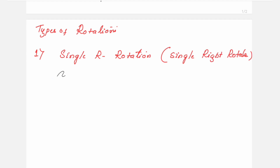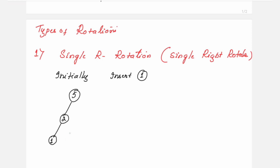The single right rotation rotates the edge connecting the root and its left child in the binary tree. Initially, assume you have a tree with two nodes, 5 and 2. You want to insert node 1. Since 1 is less than 2, it comes to the left of node 2. Now check the balance factor: node 1 is 0, node 2 is 1, node 5 is 2. Node 5 has a balance factor of 2, so it needs rotation — carry out the single right rotation.